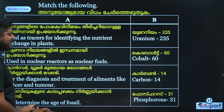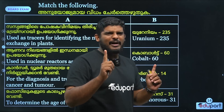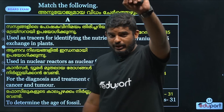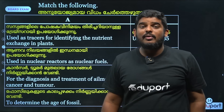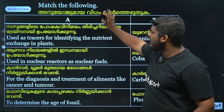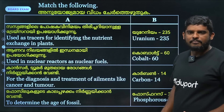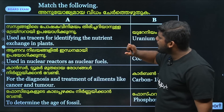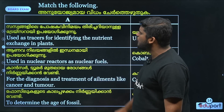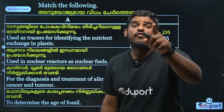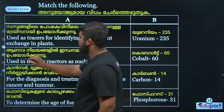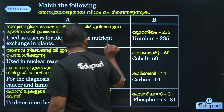The next topic is isotopes. The atomic number is the same for isotopes. Isotopes are used as tracers to identify nutrients. Phosphorus-30 is used as a tracer.